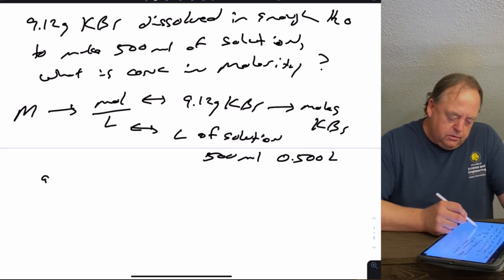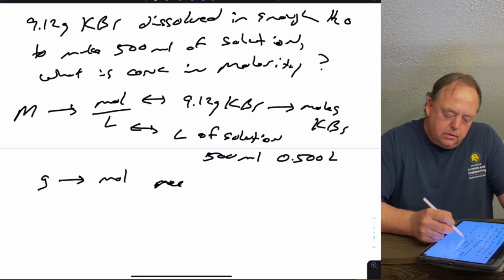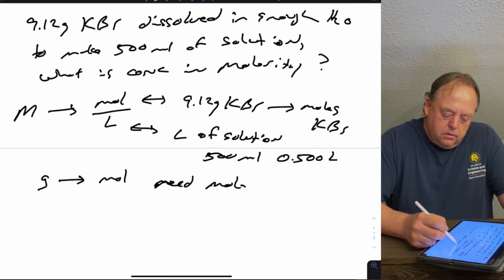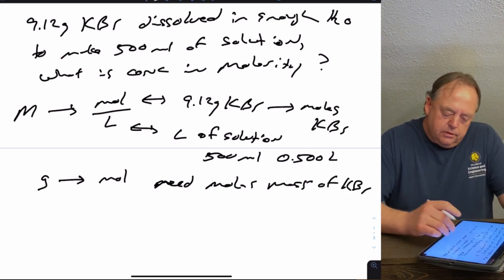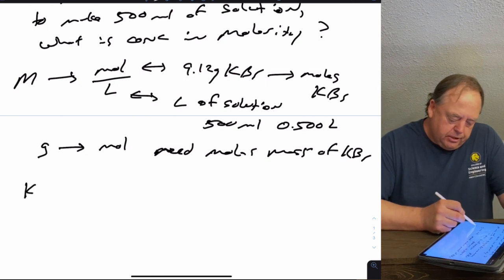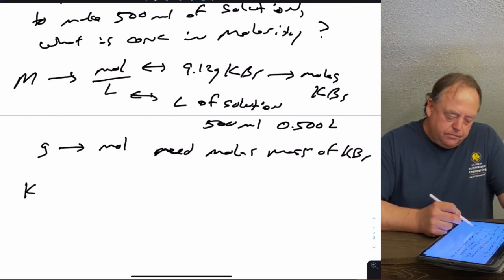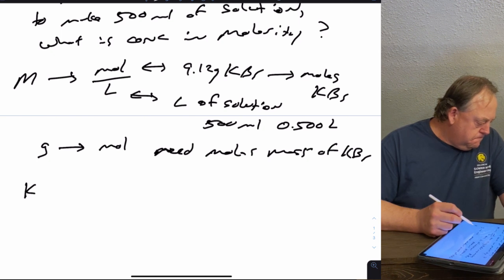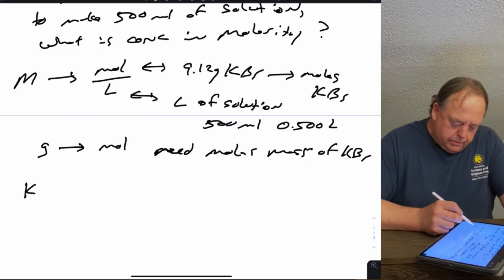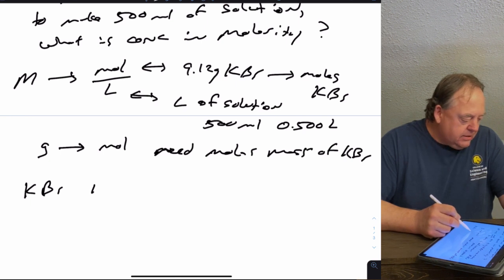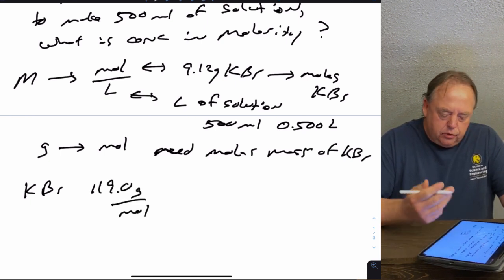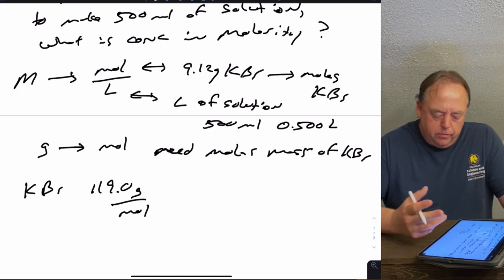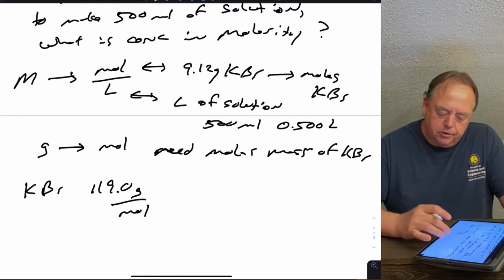To convert grams to moles, you need the molar mass of KBr. Using your periodic table, look up the molar mass of potassium and the molar mass of bromine and add them together. The total molar mass of KBr is 119.0 grams per mole.